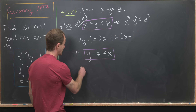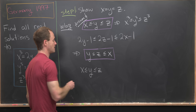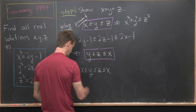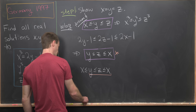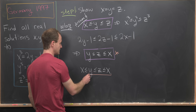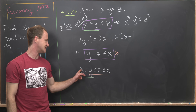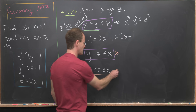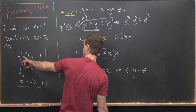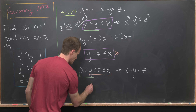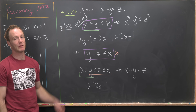Let's put together our assumption — x is less than or equal to y is less than or equal to z — with what we derived: y is less than or equal to z, which is less than or equal to x. We have x less than or equal to y, y less than or equal to z, and z less than or equal to x. We've pinned y and z between x and itself, which tells us x must be equal to y must be equal to z. Plugging this into the first equation, we get x cubed equals 2x minus 1.